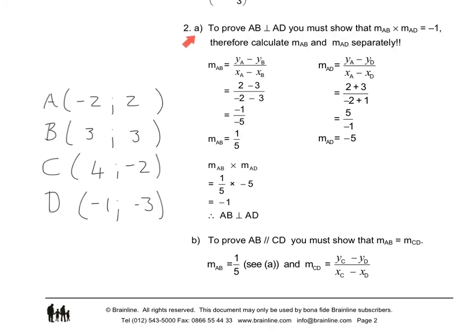For question 2, to prove perpendicular lines, we have to show that the gradients multiplied with one another gives us minus 1. So we work out the gradient of AB separately from the gradient of AD. Working with the gradient of AB, we take the difference in y-values, 2 minus 3, over the difference in x-values, minus 2 minus 3, and when we simplify, the gradient is 1 over 5.